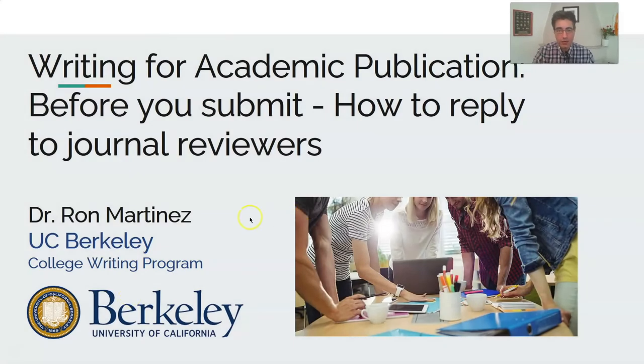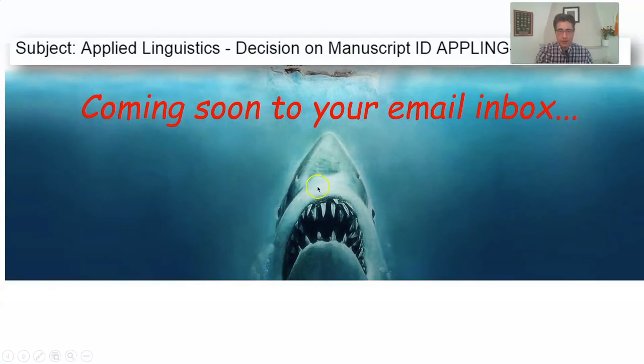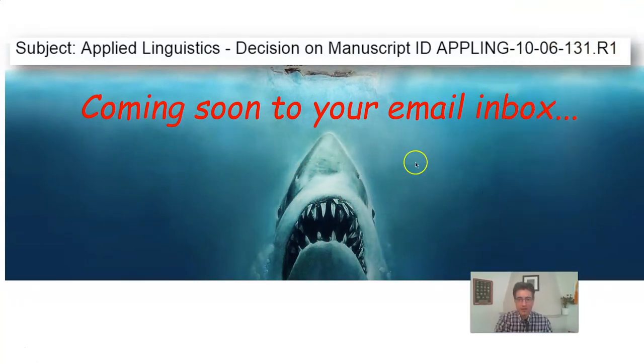In this last video, I'm going to be talking about the academic conversation we've discussed in this course before. Often in the academic publication process, the conversation you're entering actually begins with a dialogue between you as the author of the paper and your peers — usually just two or three peer reviewers. This is a very important part of the validation process of publishing research, so we're going to talk about how to reply to reviewers, what you can expect from the review process, and how to structure a reply — and also how not to.